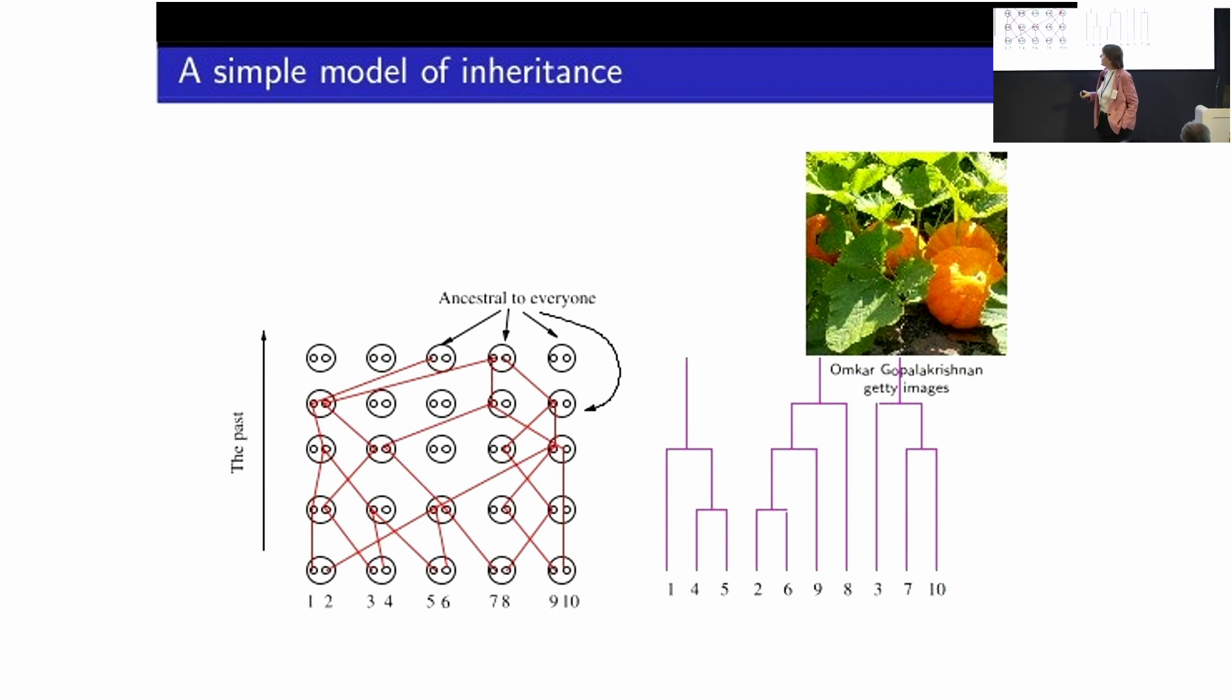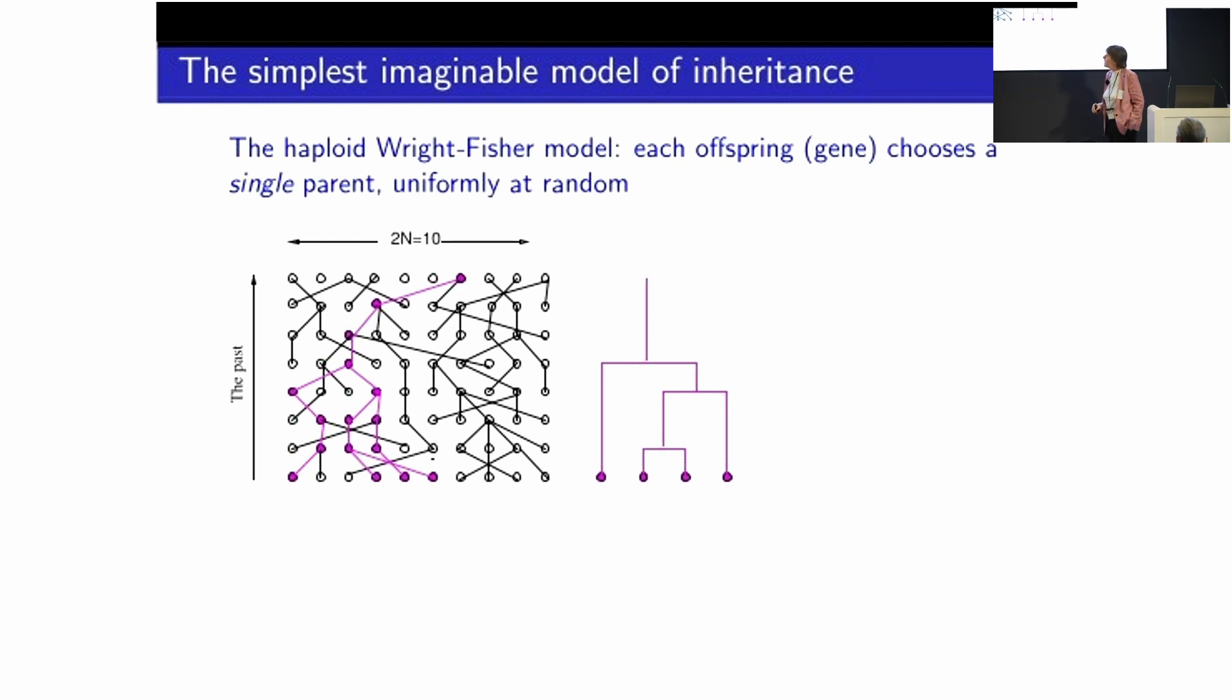And the other thing to notice is, let's suppose I look at this gene. First of all, we sampled a parent from the five individuals in the previous generation uniformly at random. And then from within that first parent, I chose a gene uniformly at random. What I could equally have done was take all these ten genes and put them in a melting pot and think of this gene as just choosing from that melting pot uniformly at random. Because if I sample a plant and then sample uniformly within the plant, I'm just sampling uniformly from the ten genes that are available. And that takes me to the simplest imaginable form of model. So the simplest imaginable model of inheritance, also named after Wright and Fisher, is what we call the haploid Wright-Fisher model. And this is just that each offspring, which is now a gene, selects a single parent uniformly at random from the previous generation.